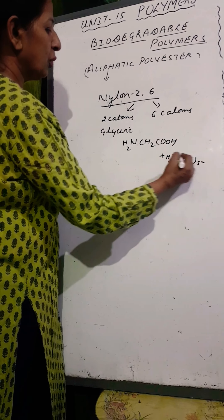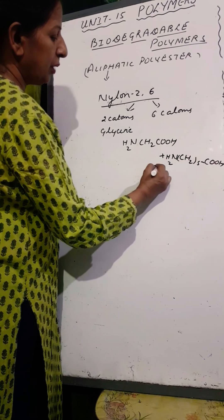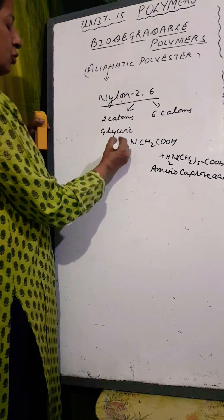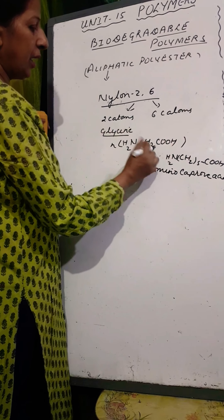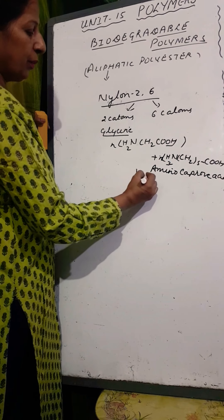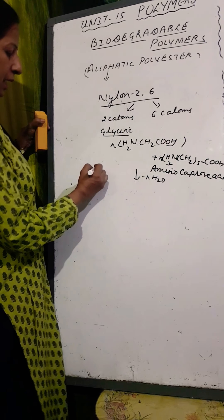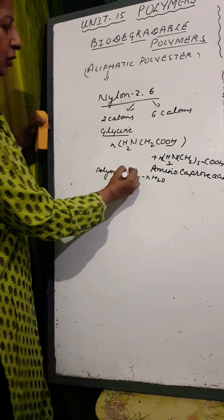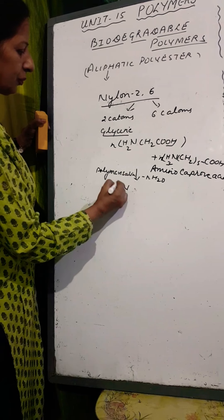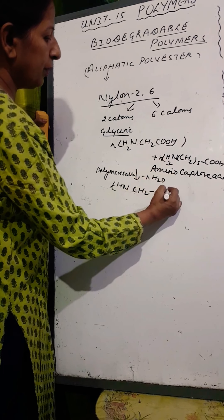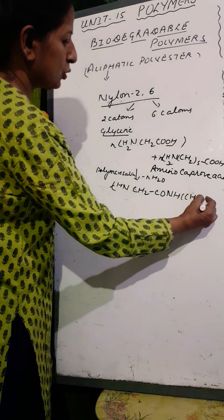The other monomer having six carbon atoms is also an amino acid: aminocaproic acid, with formula NH2-(CH2)5-COOH. N units of glycine and N units of aminocaproic acid undergo condensation polymerization. OH from one and H from the other are eliminated, and N units of water are removed. This leads to the formation of Nylon-2-6 with amide linkage: -NH-CH2-CO-NH-(CH2)5-CO- repeated N times.